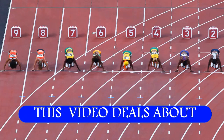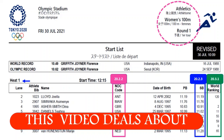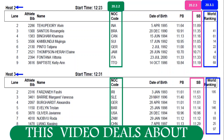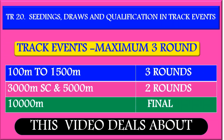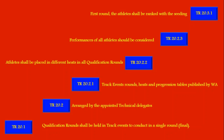How many athletes participated in Olympics women's 100 meters? How many hits in round 1? How many athletes in each heat, and what is the qualifying process for the second round? What is the maximum round for track events, and what rule is used to seed the athletes for round 1 hits?